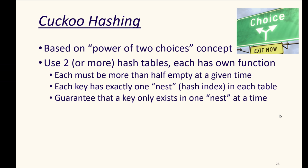And we need to be able to guarantee that a key exists only in one nest at a time. We don't want to store two values for the same key, so we want to check where it would have hashed to in any of our hash tables if we are updating the value for that key, for example, or if we're trying to insert that key.